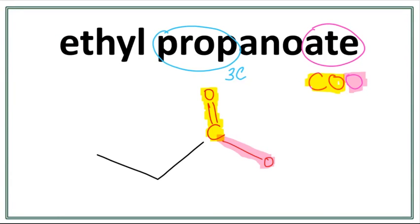Let's number the carbons. The carbon in the parent chain is always the first carbon, second carbon, third carbon. Let's work on the side chain now. The side chain always attaches with the oxygen in the COO group, which is right here.